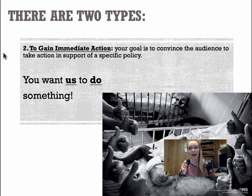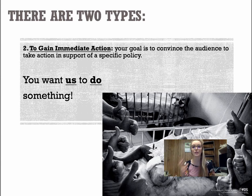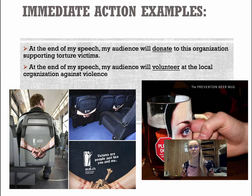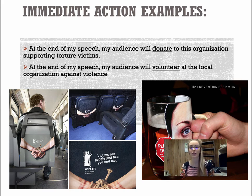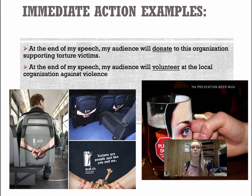To gain immediate action, your goal is to convince the audience to take action in support of a specific policy right now — you want them to do something. Examples: 'At the end of my speech, the audience will donate to an organization supporting torture victims' — 'donate' is an active, measurable verb. 'At the end of my speech, my audience will volunteer at the local organization against violence.' When developing propositions of policy, ask: is there a need for change in the current policy? If it ain't broke, don't fix it. The burden of proof — the need to prove there is a problem and a need for change — rests with you. You have to analyze and explain that problem and then give a practical solution.